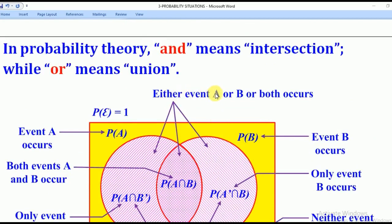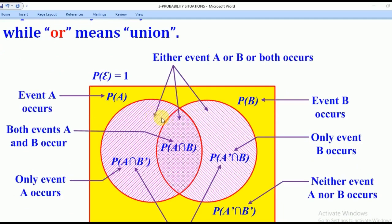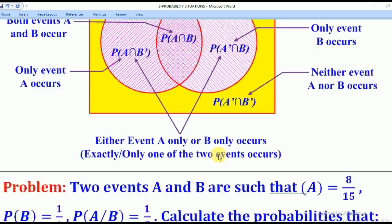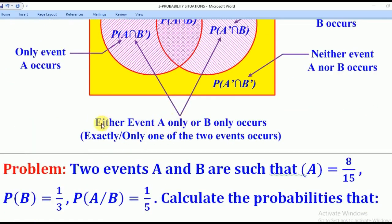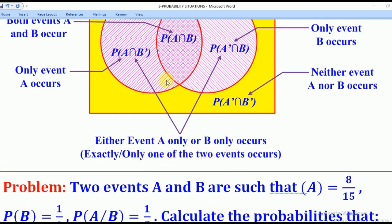When they use the term 'A or B or both', it means they want the union, which is equal to A intersection B complement, plus A intersection B, plus A complement intersection B. When they ask for either event A only or event B only, you add the two. Another word for this is 'exactly one' or 'only one of the two events occurs', which is the same as event A only or event B only.